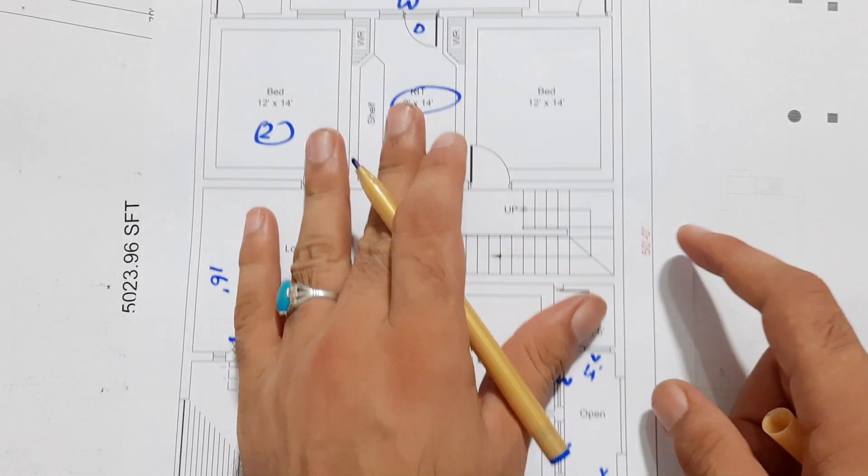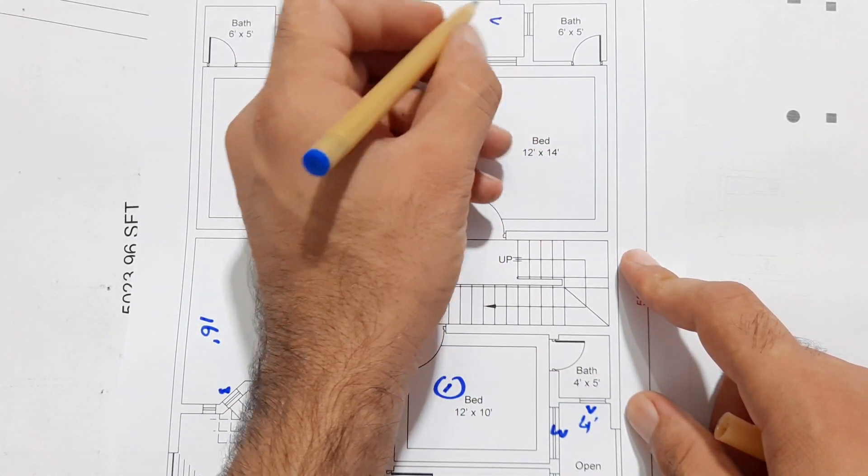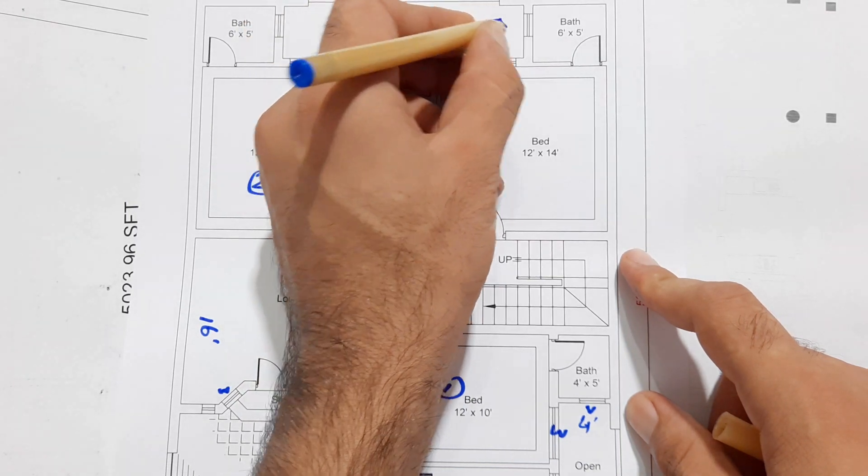Open sky with this - sorry for this, this is 4 feet - sorry, this is 5 feet, okay.